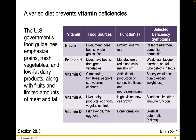A varied diet prevents vitamin deficiencies. The U.S. government's food guidelines emphasize grains, fresh vegetables, and low-fat dairy products, along with fruits and limited amounts of meat and fat. For example, niacin you can get from consuming liver, meat, legumes, whole grains, and fish, and niacin is important for growth and energy use. If you don't consume enough niacin, you can have a deficiency called pellagra. Each vitamin has important functions, food sources, and deficiency symptoms.